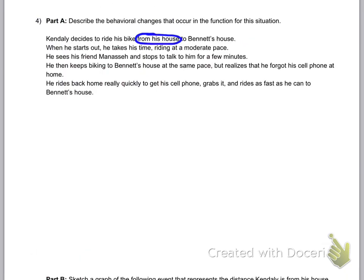All right. Last thing here we're going to do, you guys, I want to talk about this situation on the back here. Kindly decides to ride his bike from his house to Bennett's house. We're going to describe the behavior. And you notice on the y-axis, that's the distance from Kindly's house.